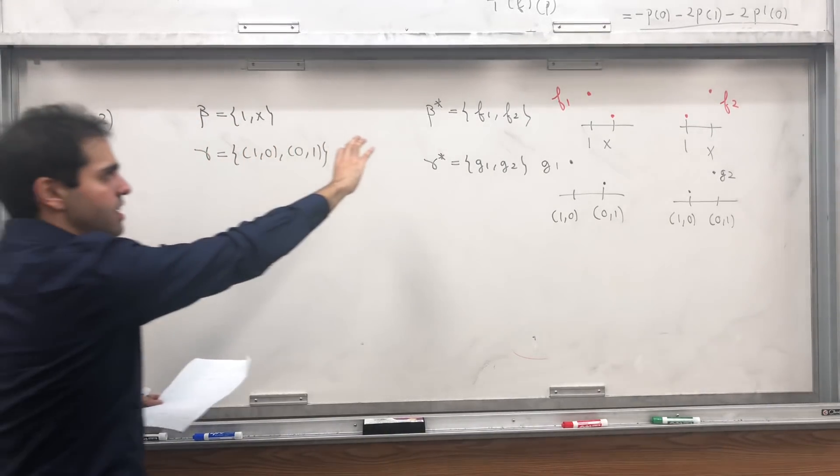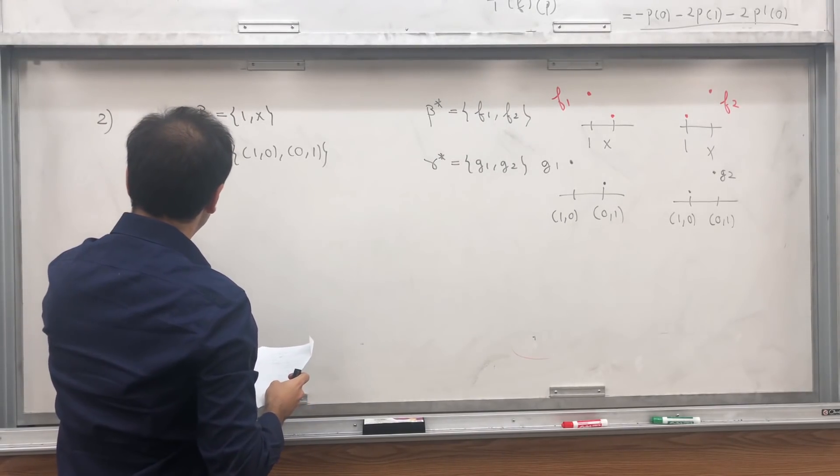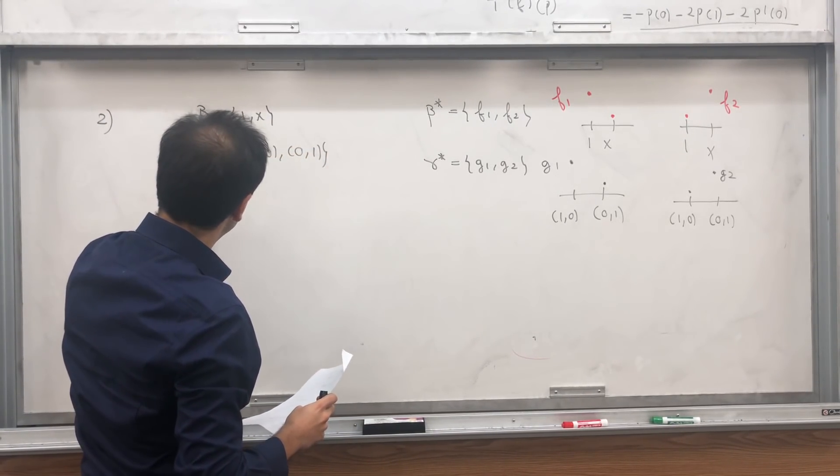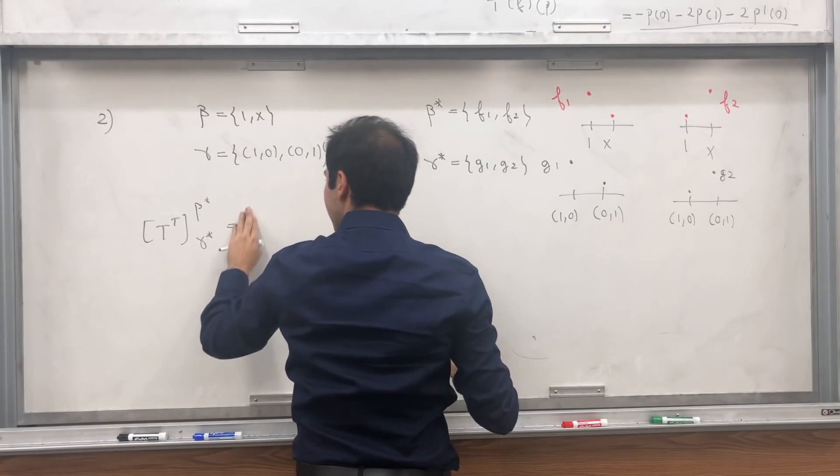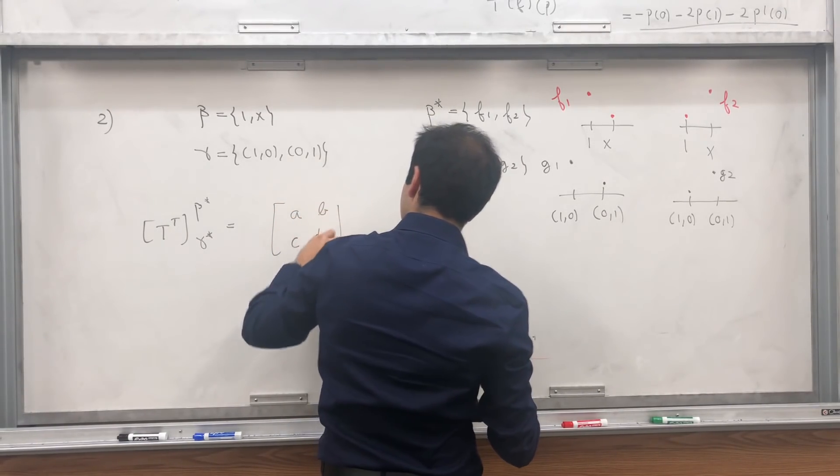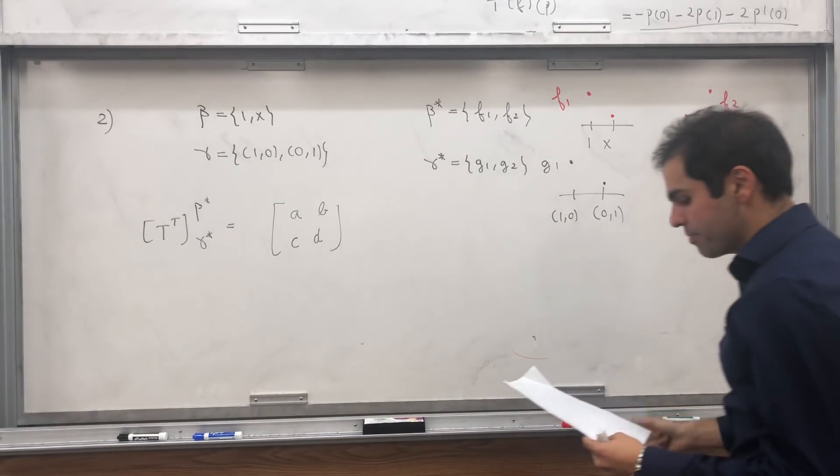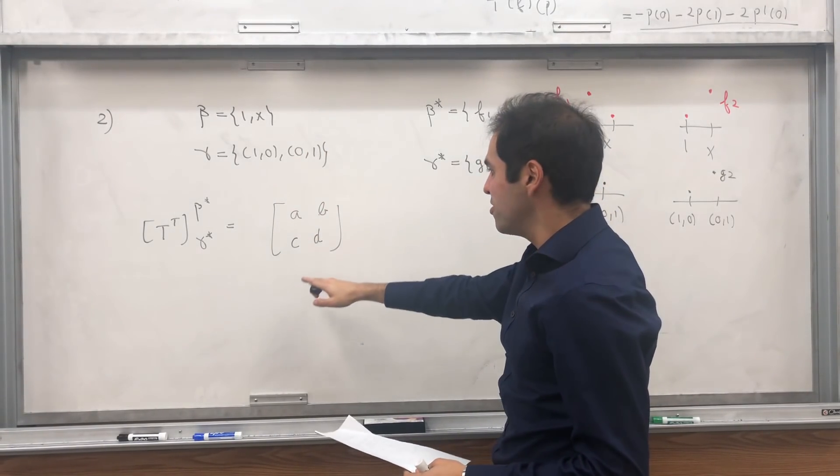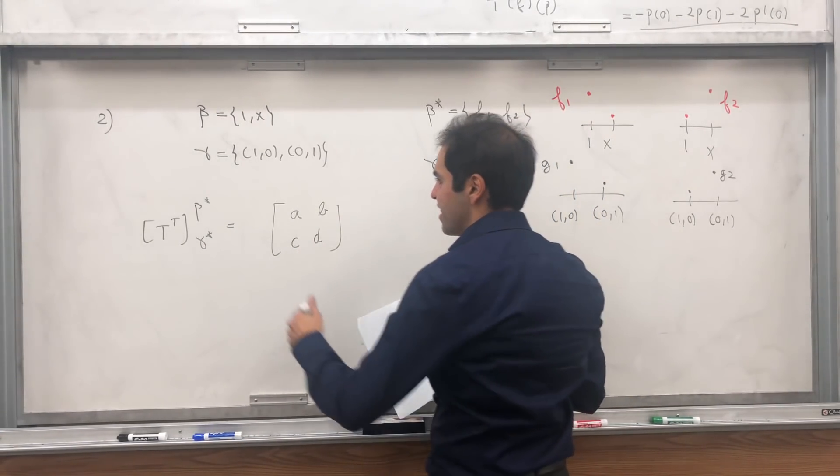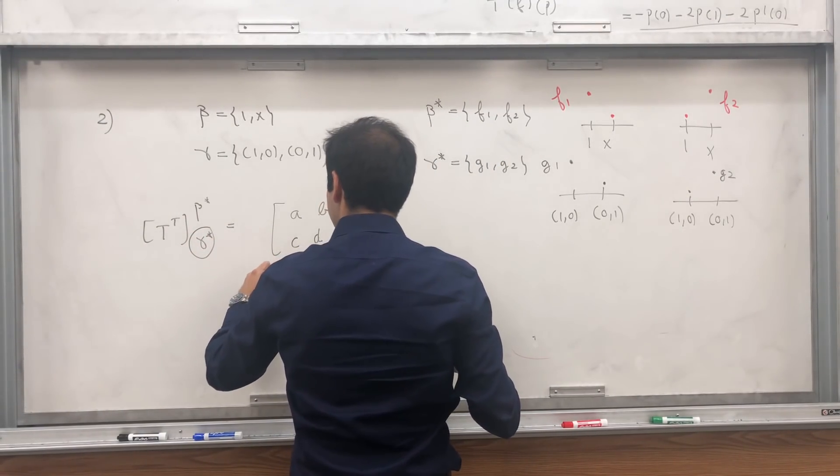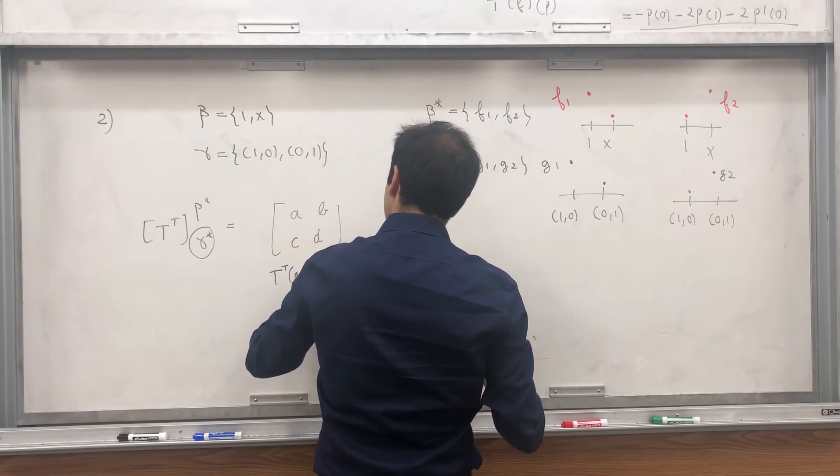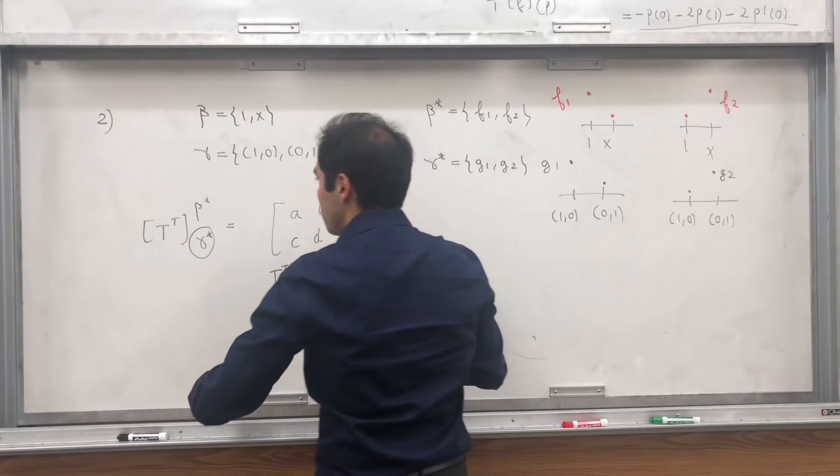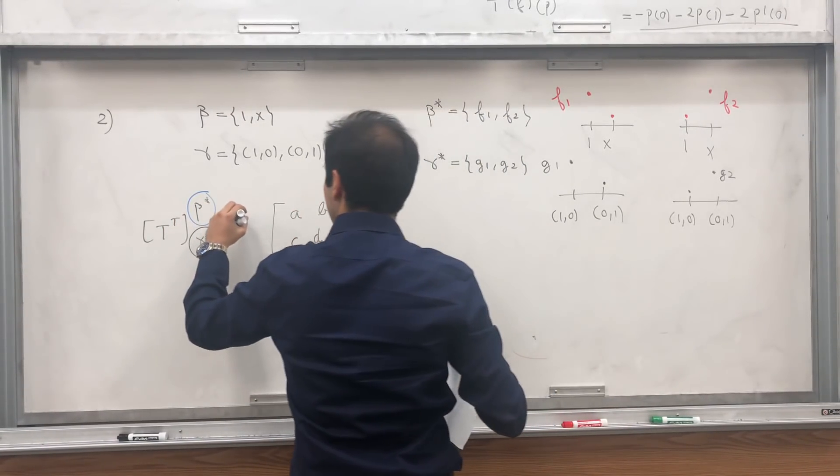Now that we have those two bases, we can now find the matrix of T transpose. Remember, for T transpose, you flip and you put stars. So it goes from gamma star to beta star. We know it's a 2 by 2 matrix, so let's just write it as ABCD. And the goal is to find ABCD. What does it mean to find the matrix of T transpose? It means evaluate T transpose at the basis vectors. You take T transpose at the basis vectors and you express them in terms of your output vectors, which here are in beta star, in terms of F1 and F2.